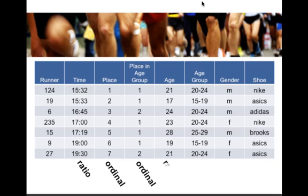Coming back to age — age is a ratio variable. There's a true zero, and we can tell how much older or younger one person is than another. When you start grouping things into age groups, there could be debate about whether it retains ratio properties, but it really takes on properties of an ordinal variable — we know the relative order, but not the exact difference between age group positions. Gender and shoe type we've already covered — these are categories with no ordering of better to worse or smaller to bigger.